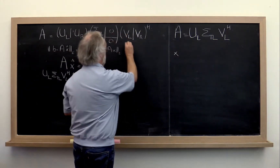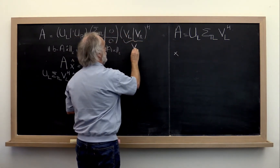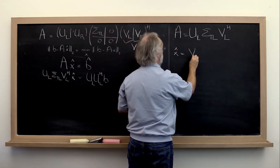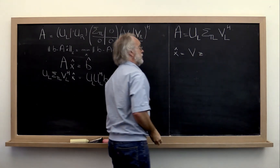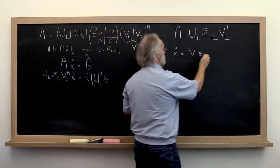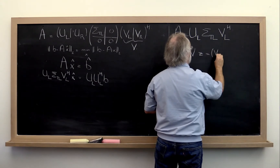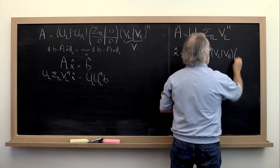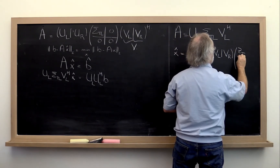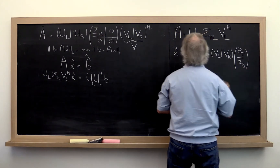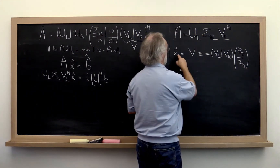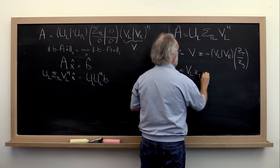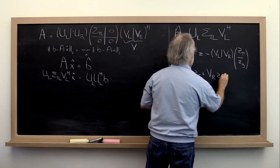V — all of this — is a unitary matrix, and therefore x-hat can be written as V times some vector z. We can partition V into V-left and V-right, and z into top and bottom, so x-hat equals V-left times z-top plus V-right times z-bottom.